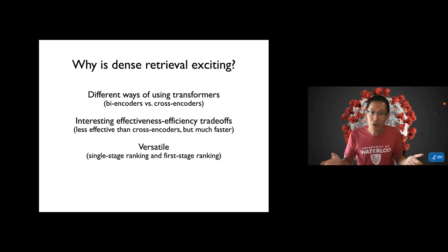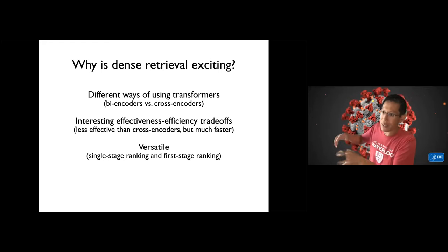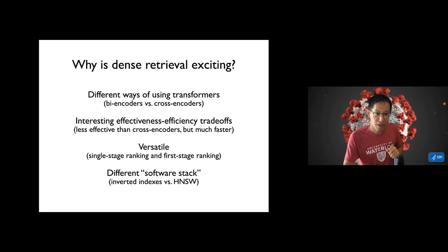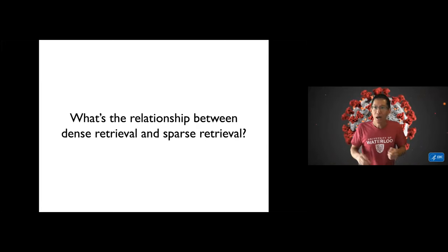These bi-encoders manifest interesting effectiveness-efficiency trade-offs. Generally they're less effective than re-ranking cross-encoders but they're much faster, and as a result they're actually quite versatile. You can use them for direct ranking from a corpus or you can use them for first-stage ranking and then do re-ranking after that. So you can sort of mix and match them and put them in the standard multi-stage pipeline. And finally from a software perspective, dense retrieval is really interesting because it requires a completely different stack.